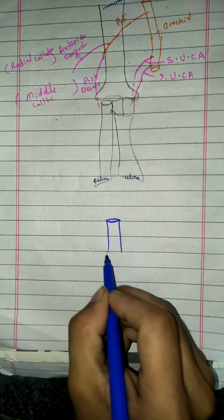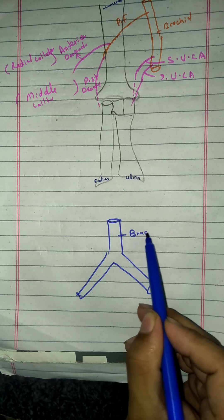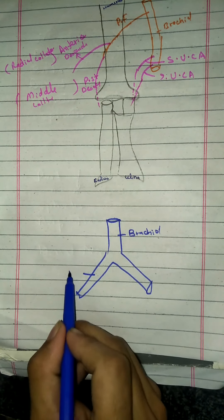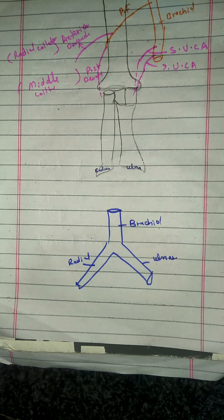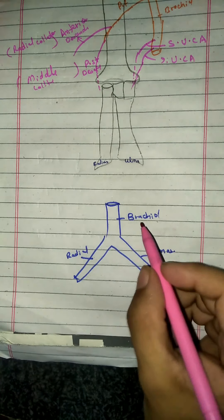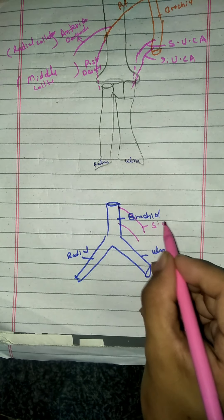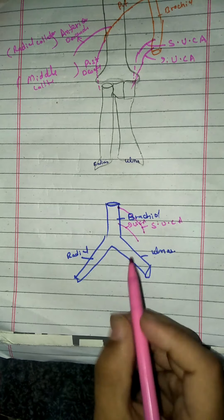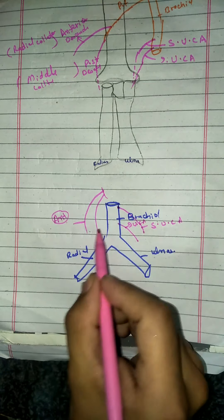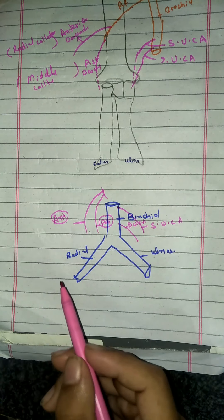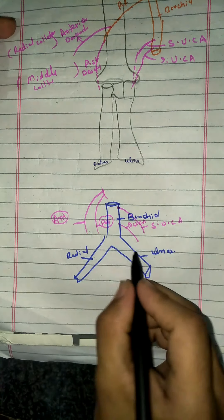Let's draw one more diagram. The brachial artery divides at the head of the radius into the radial artery and the ulnar artery. As seen in the above figure, the superior ulnar collateral artery and the inferior ulnar collateral artery come down. From the profunda brachii artery, the anterior descending branch — also known as the radial collateral — and the posterior descending branch — also known as the middle collateral — arise.